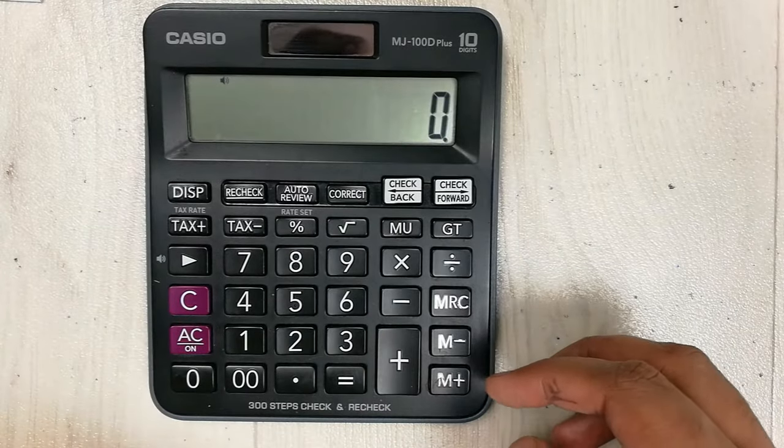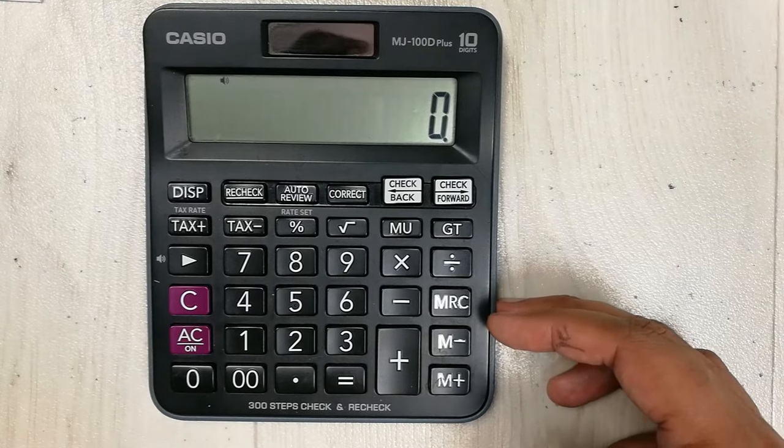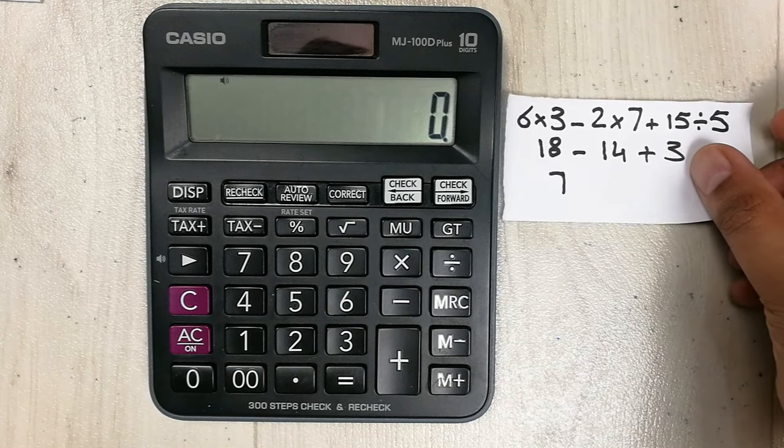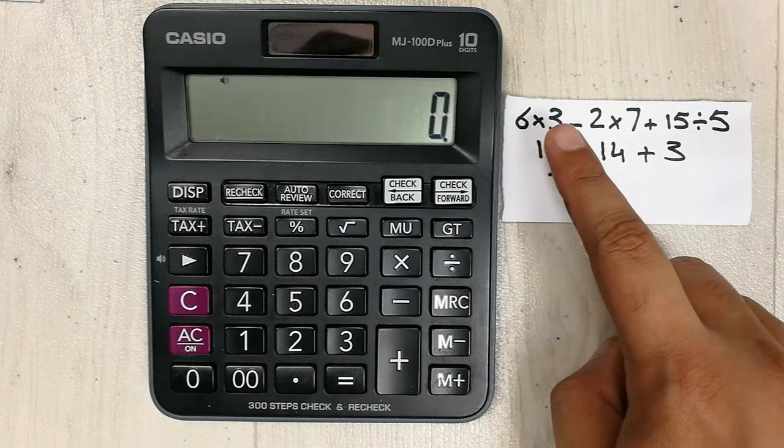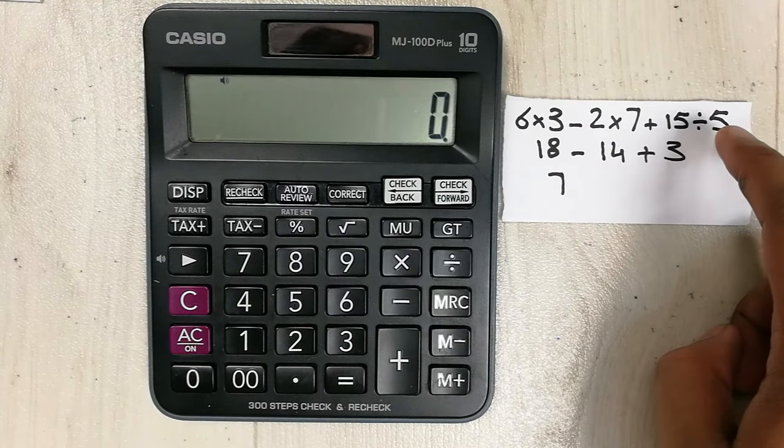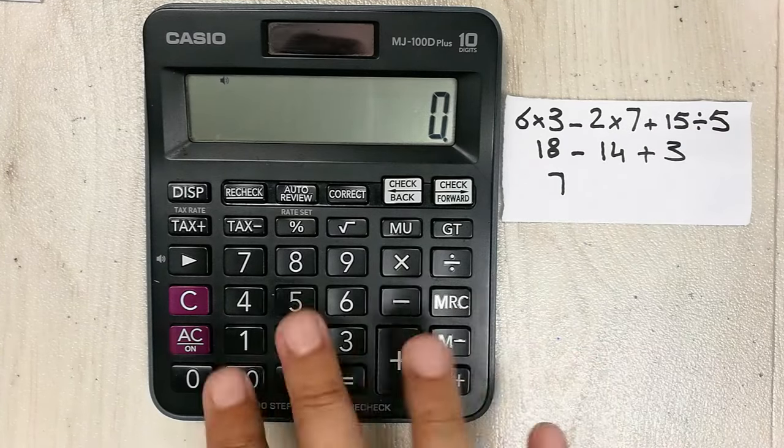We use these three buttons for memory and for bigger calculations. For example, I have this calculation: 6 multiplied by 3 minus 2 multiplied by 7 plus 15 divided by 5.